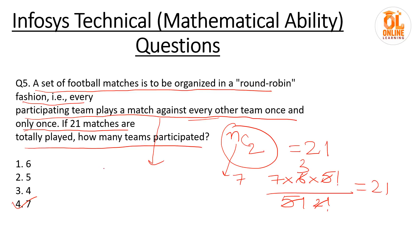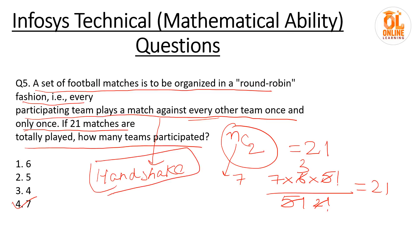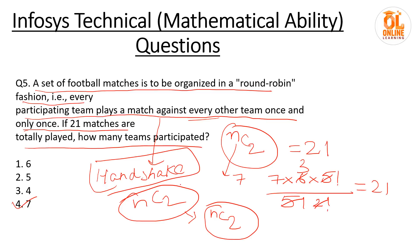Remember: whenever it is given that one team plays against every other team, or one person makes a handshake with every other person, the total number of matches or handshakes is always nC2. Please remember this formula.